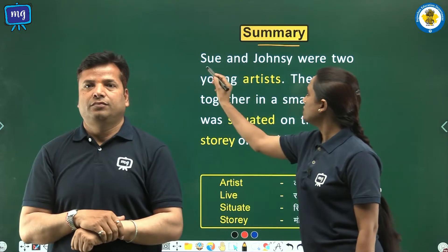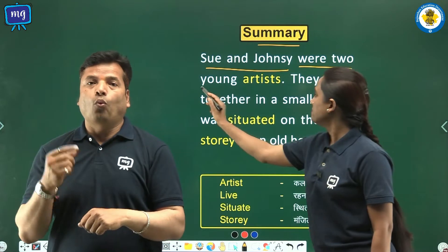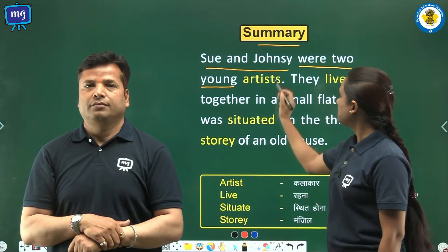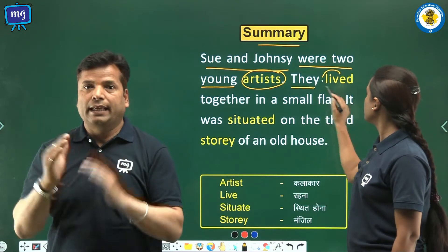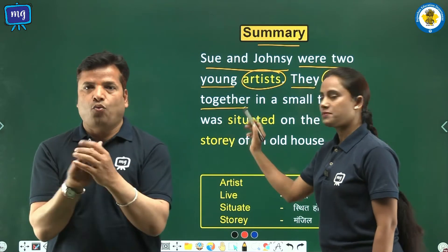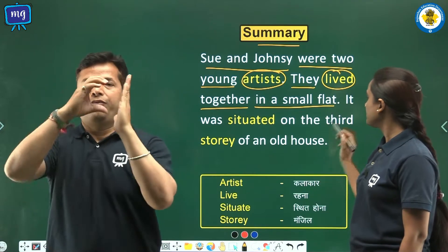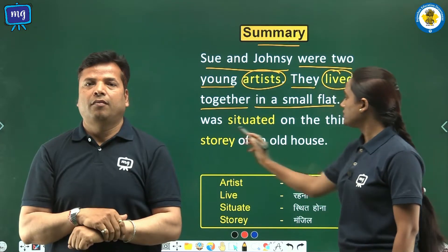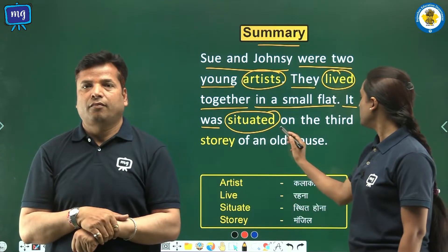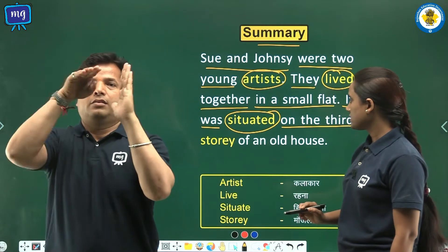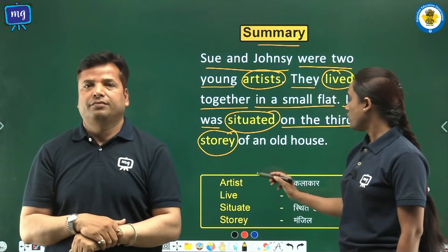Sue and Johnsy were two young artists. They lived together in a small flat. It was situated on the third story of an old house.